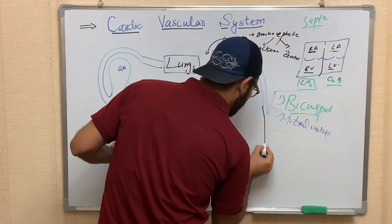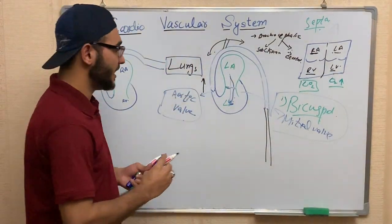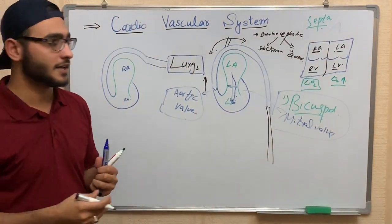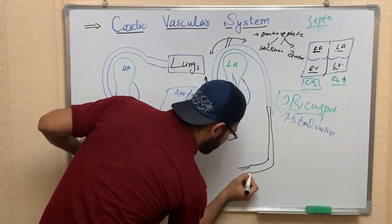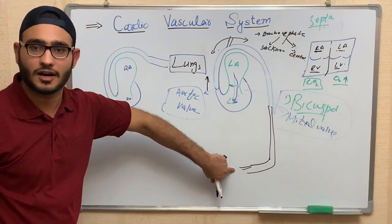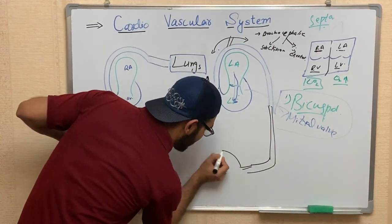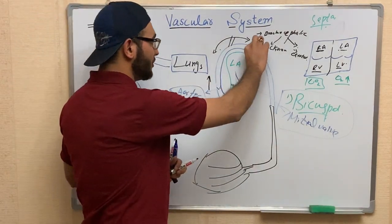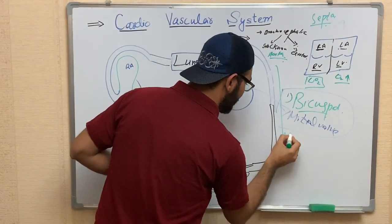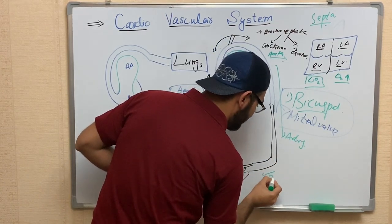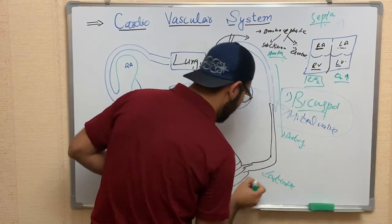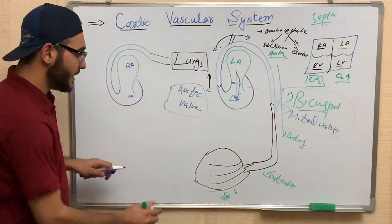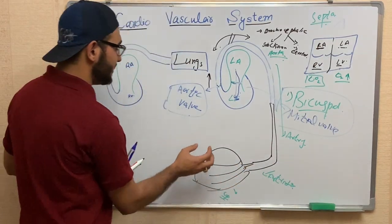When blood goes downward to the lower limb, the aorta is divided into arteries, and then the arteries are divided into arterioles, and the arterioles are divided further into capillaries. In the capillaries, oxygenated blood is present.